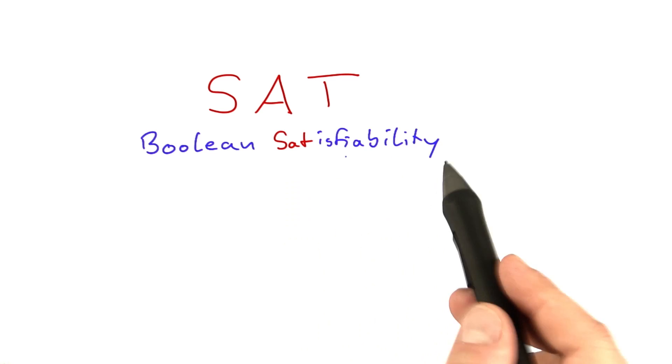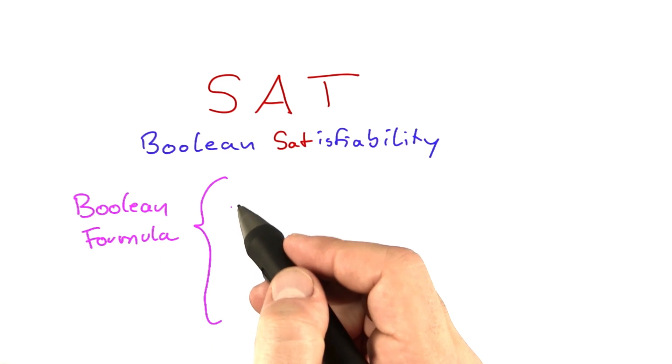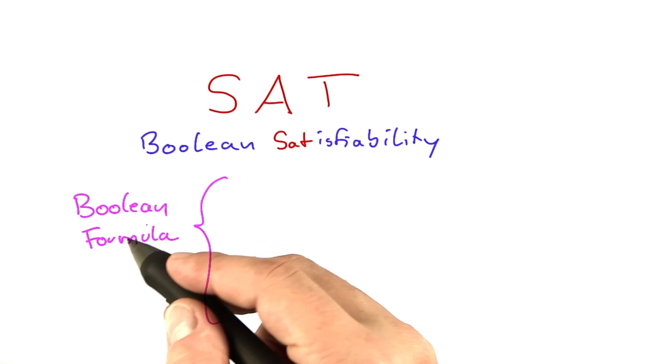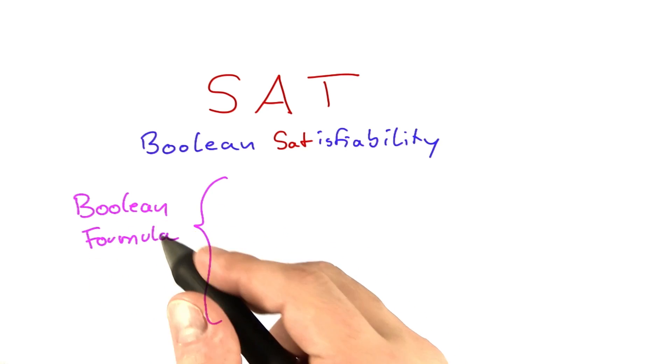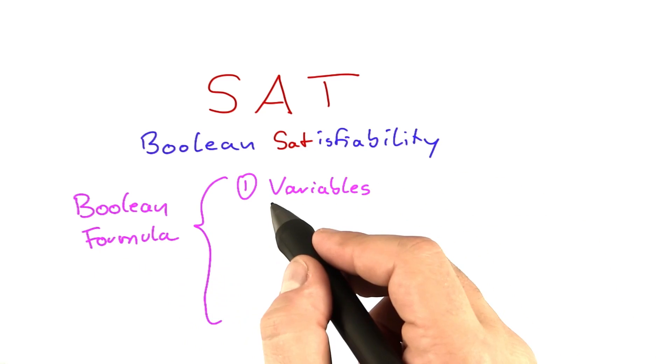What is the Boolean satisfiability problem? The input for SAT is a so-called Boolean formula, and that sounds much more intimidating than it is because Boolean formulas are very simple structures. They consist of only four building blocks. As any kind of formula, we have variables.